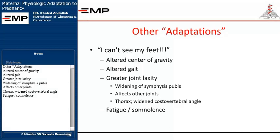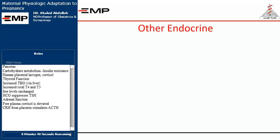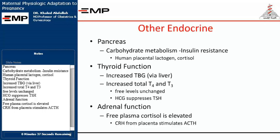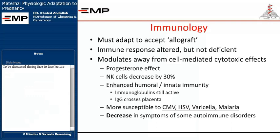Other adaptations include: altered center of gravity, altered gait, greater joint laxity, widening of the symphysis pubis affecting other joints, thorax widening with widened costo-vertebral angle, fatigue and somnolence. Regarding endocrine changes: the pancreas shows insulin resistance influenced by human placental lactogen and cortisol. Thyroid function shows increased TBG via the liver, increased total T4 and T3 with free levels unchanged, and HCG suppresses TSH. Adrenal function shows elevated free plasma cortisol, with CRH from the placenta stimulating ACTH.